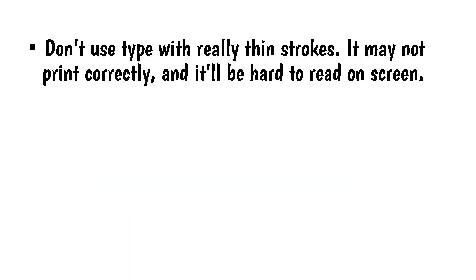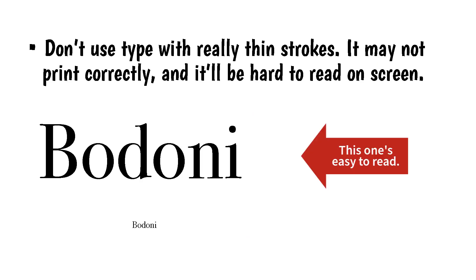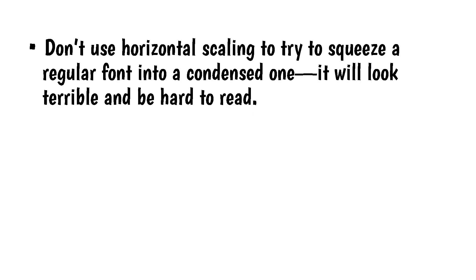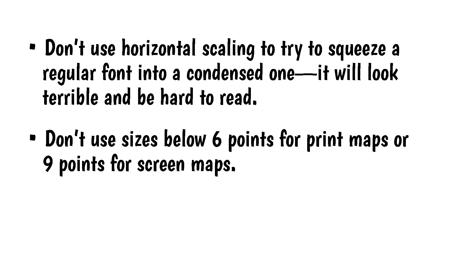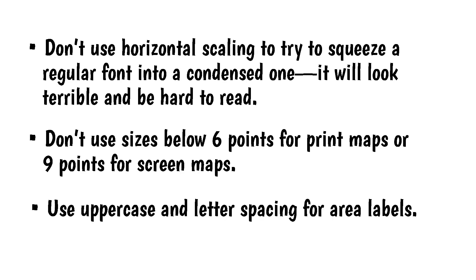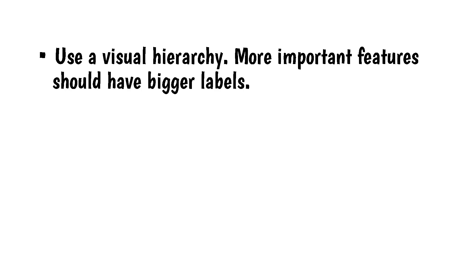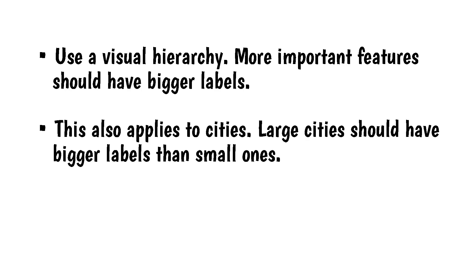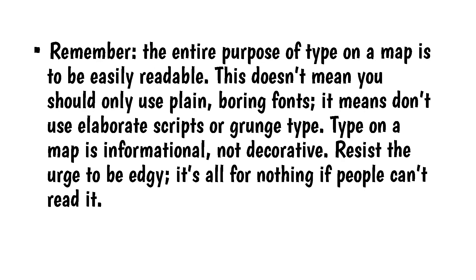Tips. Don't use type with really thin strokes — it may not print correctly and will be hard to read on screen. Don't use horizontal scaling to try to squeeze a regular font into a condensed one; it will look terrible and be hard to read. Don't use sizes below 6 points for print maps or 9 points for screen maps. Use uppercase and letter spacing for area labels. Use a visual hierarchy — more important features should have more prominent labels, and this also applies to cities: large cities should have bigger labels than small ones. Remember, the entire purpose of type on a map is to be easily readable. This doesn't mean only plain boring fonts — it means don't use elaborate scripts or grunge type. Type on a map is informational and not decorative. Resist the urge to be edgy; it's all for nothing if people can't read it.